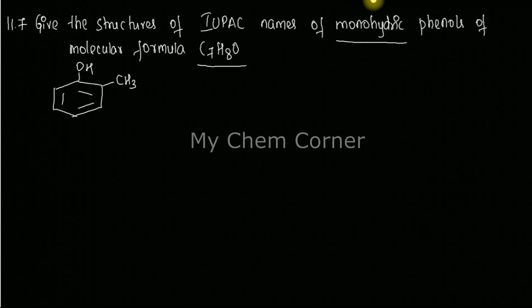Now, we need to give the structure and IUPAC name of these monohydric phenols. There are possible positions where you can place this methyl group at different locations in the phenolic structure.